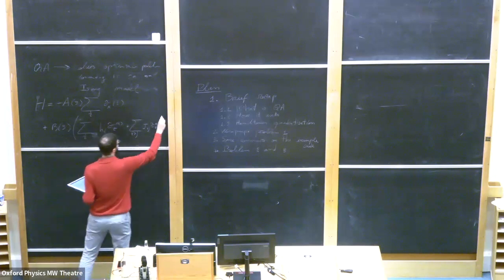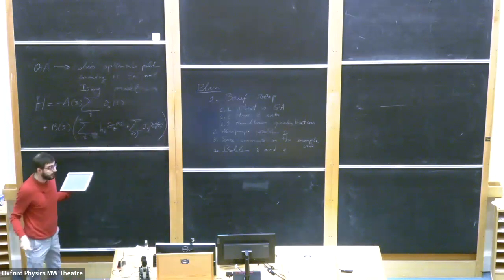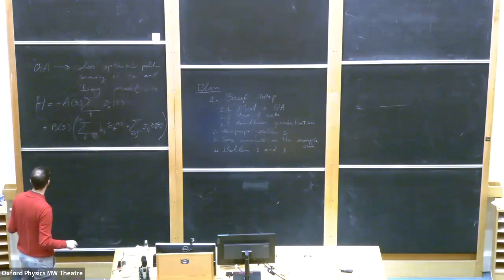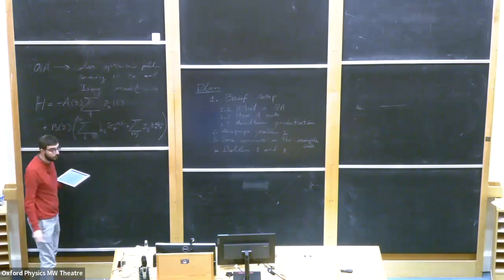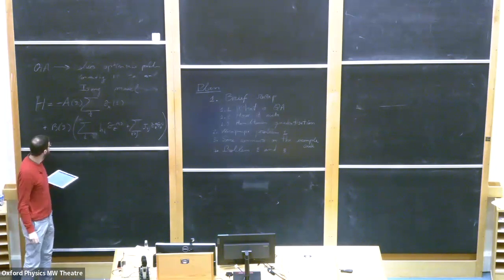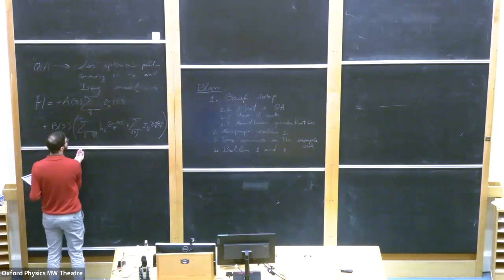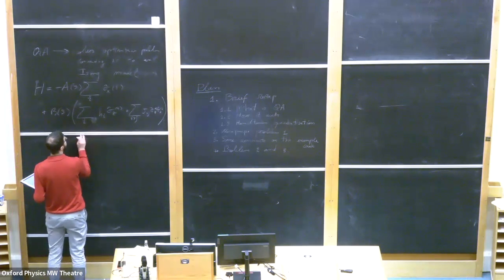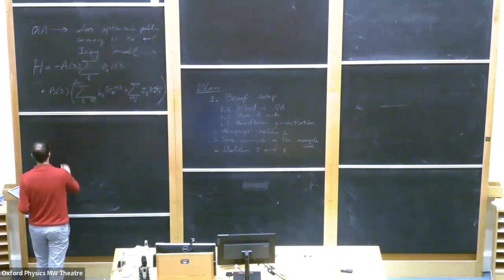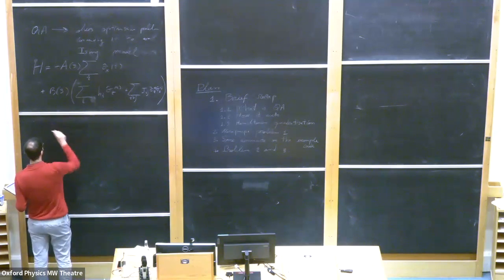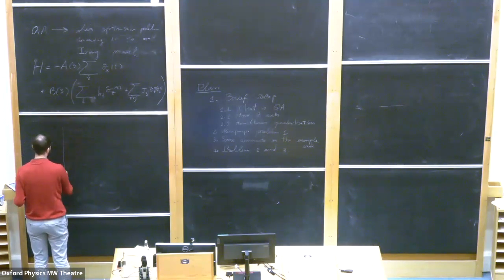This second term is called the problem Hamiltonian — it is basically the problem we want to solve. So, with these coefficients, here is how it works.